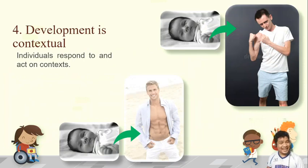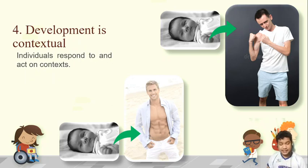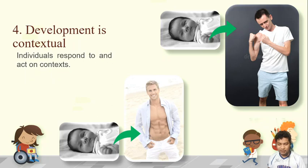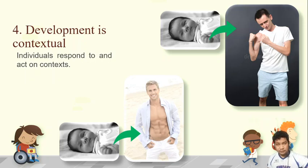The next characteristic is that development is contextual, meaning individuals respond to and act on their context. For example, if Baby Cecilion has a twin brother who was raised in another country, they may have the same genes, but the way they develop would not be the same. We respond to our culture and our environment. Cecilion raised in the Philippines and his twin brother raised in, say, the USA, will have a different development because they respond to a different context.